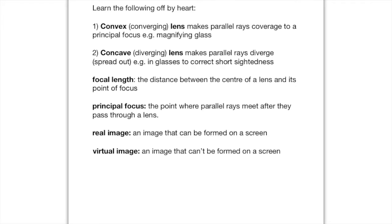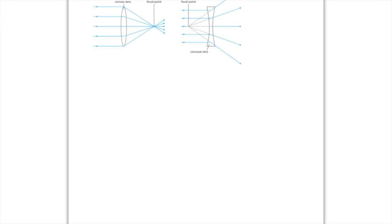With the convex lens, we can see that when the parallel rays pass through it, they then come together — i.e. they converge. And the point where they converge behind the lens is called the focal point — that's what's going on here, they're meeting.